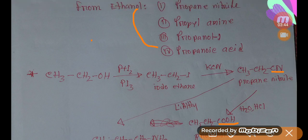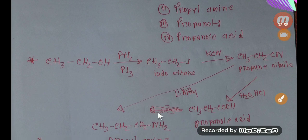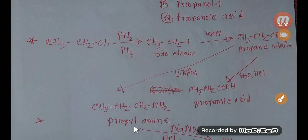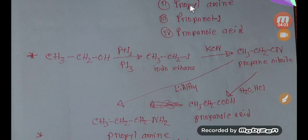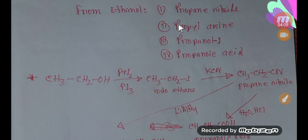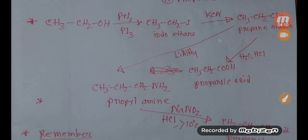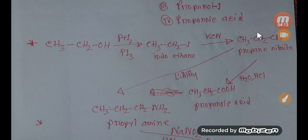And if you reduce this propanenitrile by lithium aluminium hydride (LiAlH4), then you will get propylamine. So thus we are getting propylamine, and propylamine also has one more carbon than ethanol.